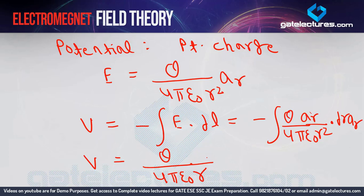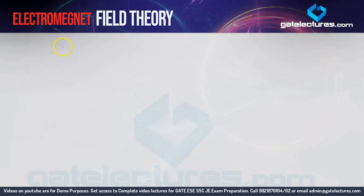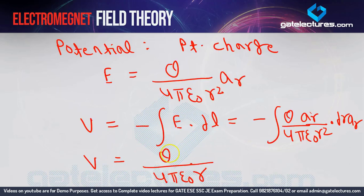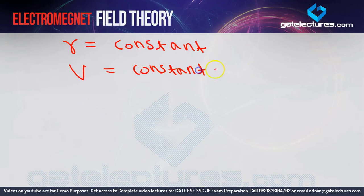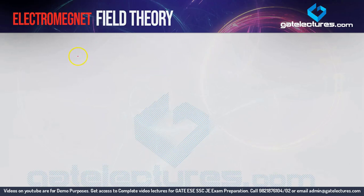Now understand one point: if r is constant, then since q is a fixed charge value and 4πε₀ is also constant, if r is constant, then V will also become constant.